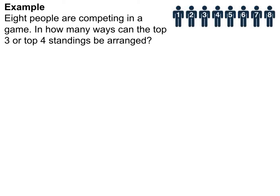We need to find how many ways to arrange the eight people into the top three spots, which is 8P3, plus the number of ways to arrange eight people into four spots, which is 8P4. Because the problem says top three OR top four, that OR tells us to add the two results.